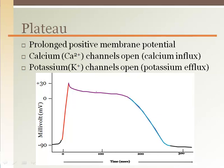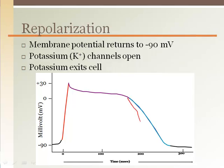Heart muscles must relax. By sustaining the action potential for over 200 milliseconds, you eliminate the ability for a follow-up action potential to come along too soon to stimulate the muscle again before it has a chance to relax. Repolarization, or return to resting membrane potential, is achieved by closing the calcium channels to stop the influx of calcium and opening of more or different potassium channels. As potassium exits the cell, the membrane potential becomes more and more negative until it reaches around minus 90 millivolts.